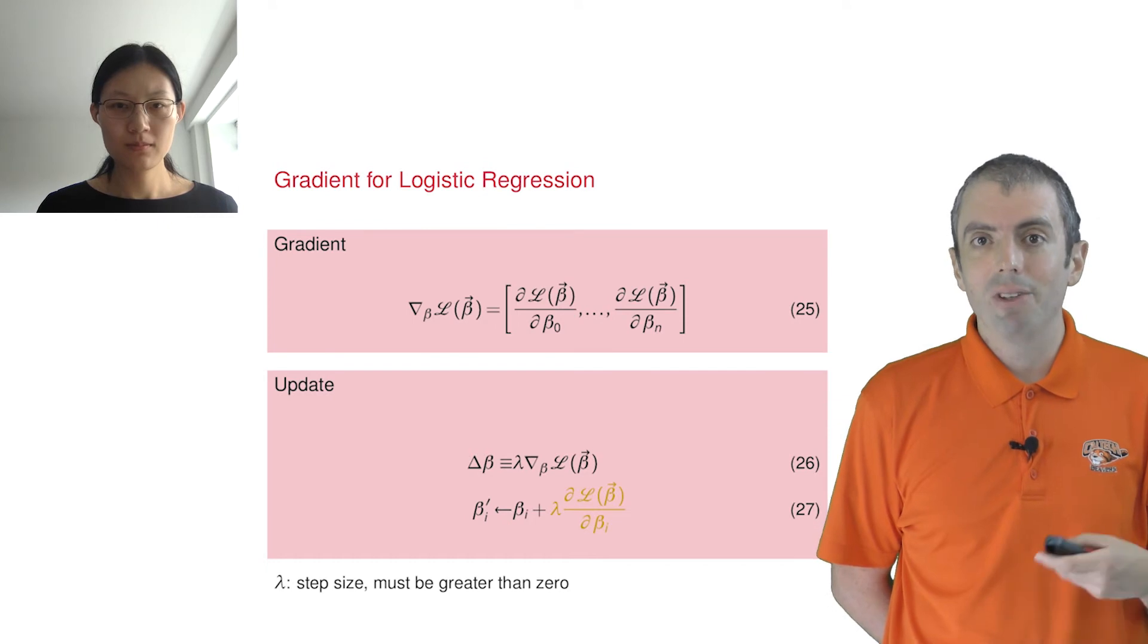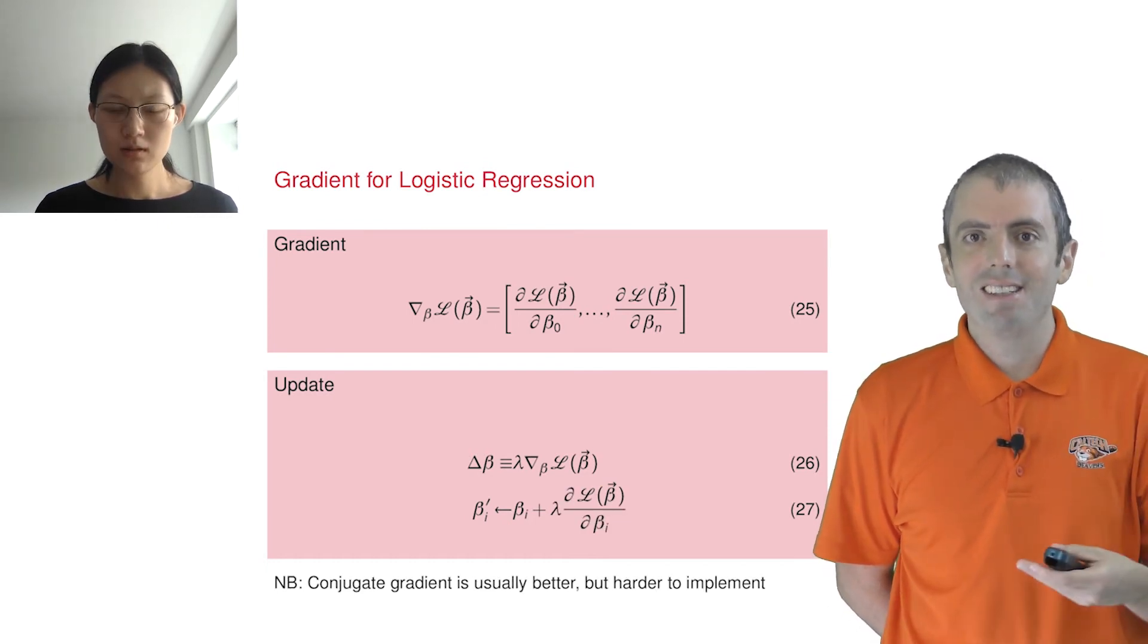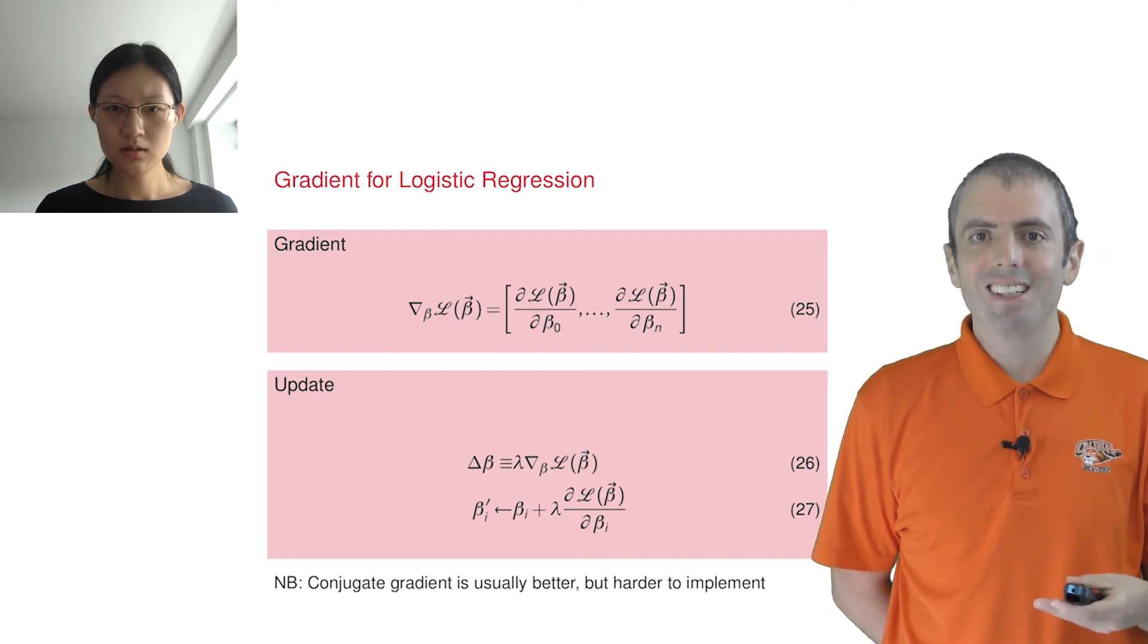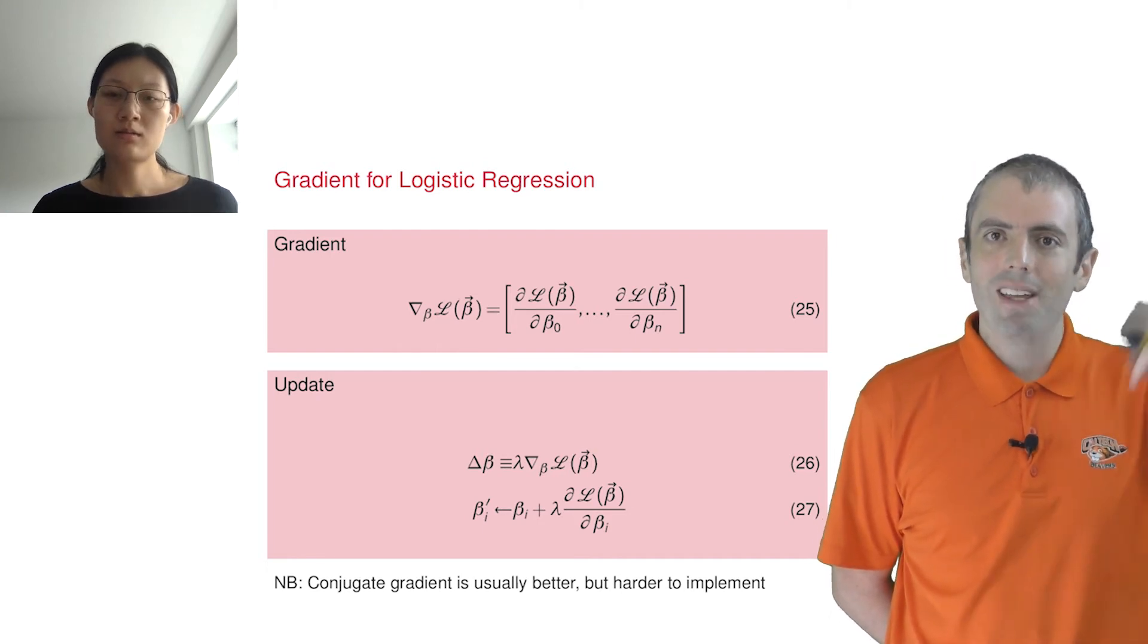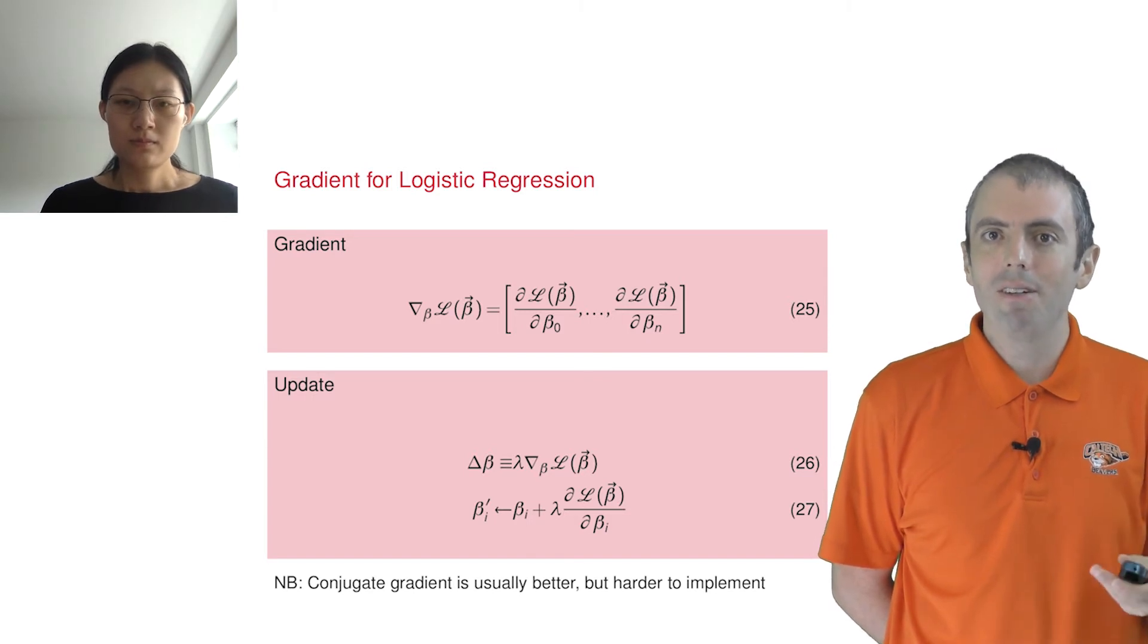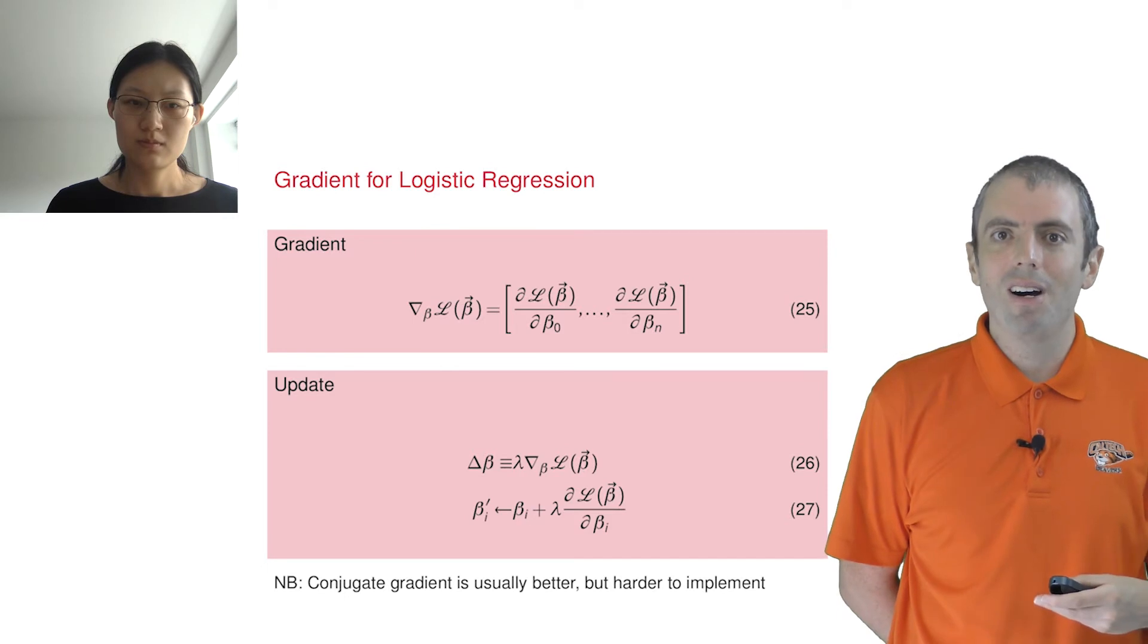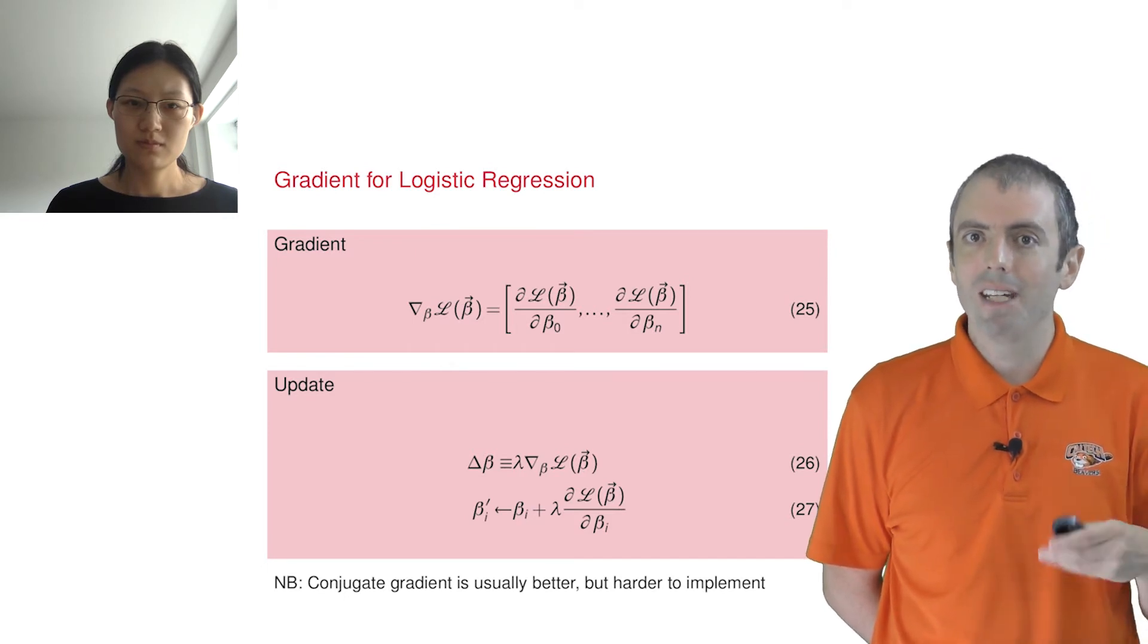Eventually, it will stop improving and then we have found a good answer. We change it using some vector with a dimension equal to the number of features. There's going to be a j for every feature forming a vector that we add to our model parameters to update the weights.